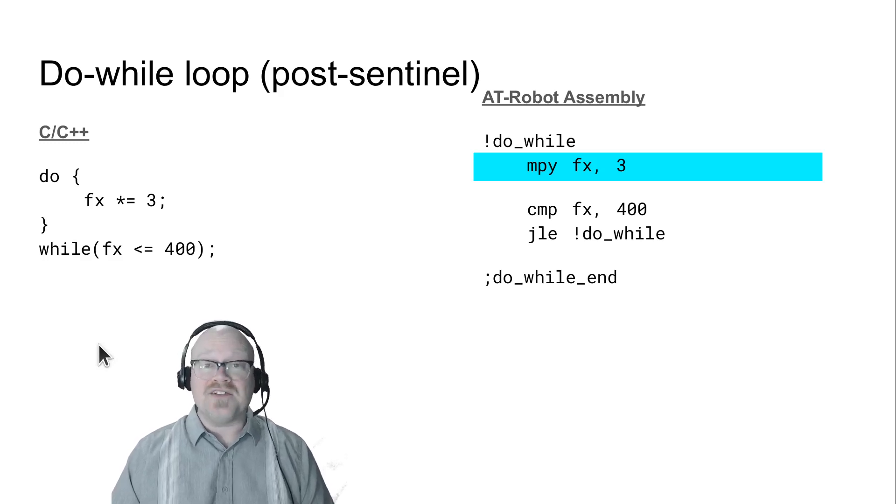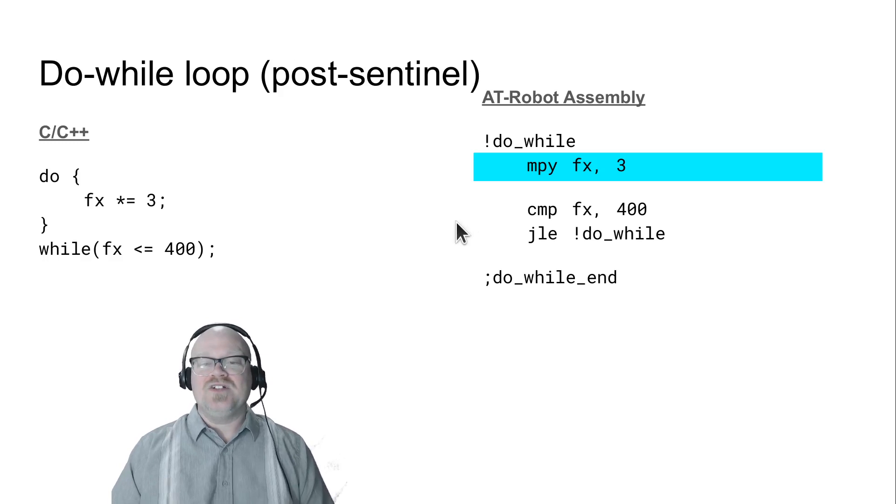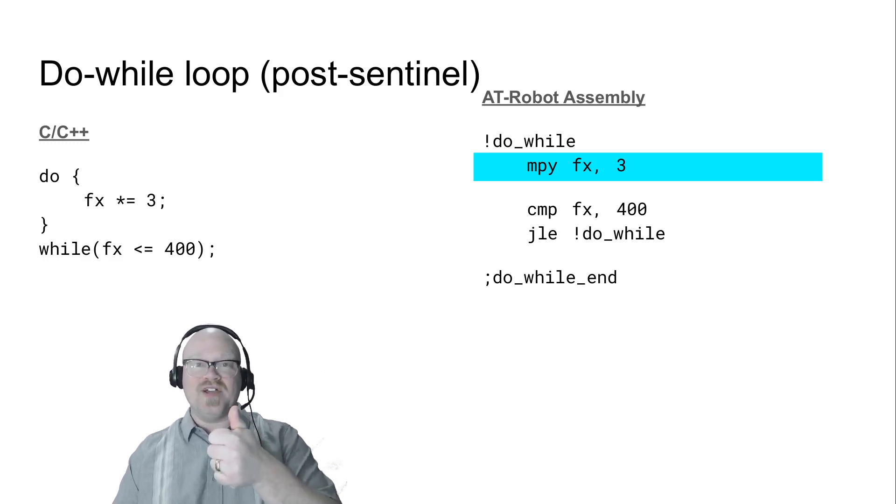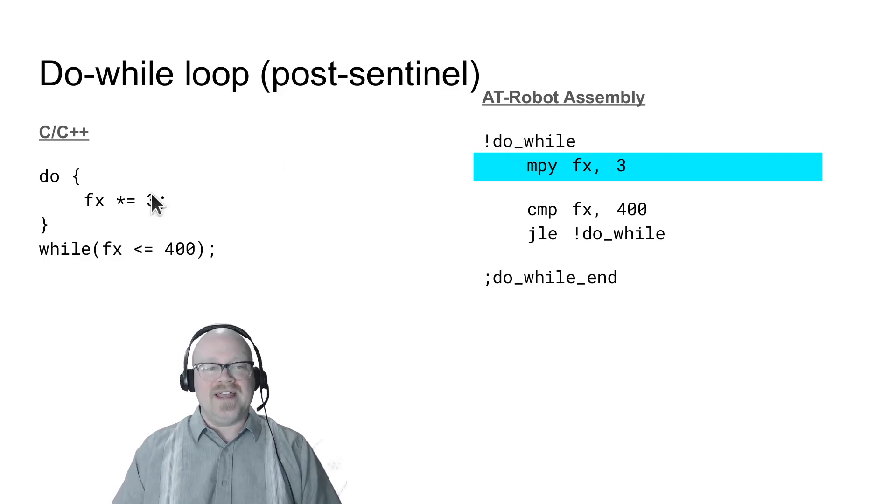So our assembly needs to do the same. Here we need a label at the top to identify this do-while loop, and we need one at the top unlike the if and else multi-condition statements we've seen before, because a loop unlike a plain old if statement has to jump back up in the code in order to repeat things. So that's what this top label is for. And just like our C code here that multiplies the FX register's contents by three, that's what we're going to do over here.